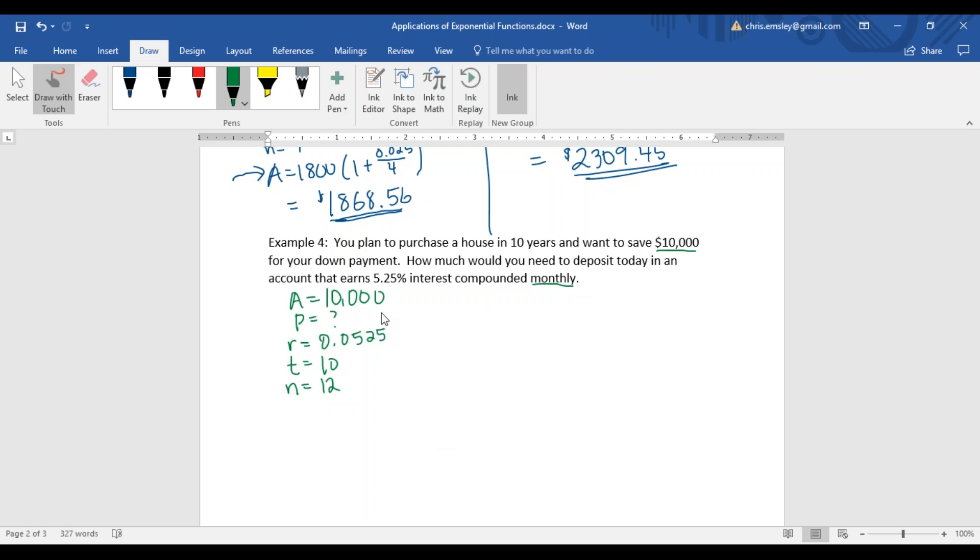We use all of this information to fill in our formula and we get 10,000 equals P times 1 plus 0.0525 divided by n, which is 12, raised to the power of n, 12, times t, which is 10.